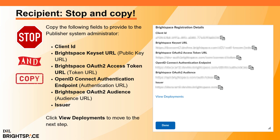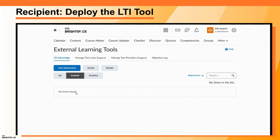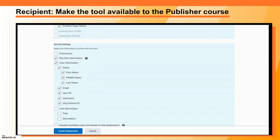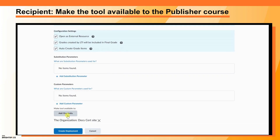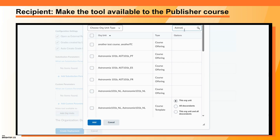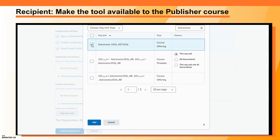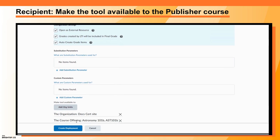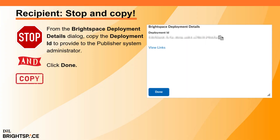Click View Deployments to move to the next step. Click New Deployment. Under Tool, select the applicable tool and enter a name. Note that you can also customize extensions, security settings, and configuration settings. Under Make Tools Available To, click Add Org Units, search for and select a course, and click Add. Then click Create Deployment. From the Brightspace Deployment Details dialog, copy the Deployment ID to provide to the Publisher Instance System Administrator. Click Done.